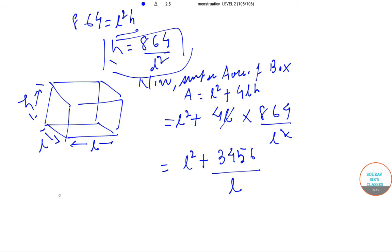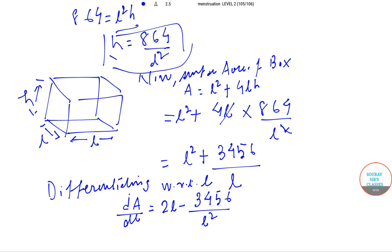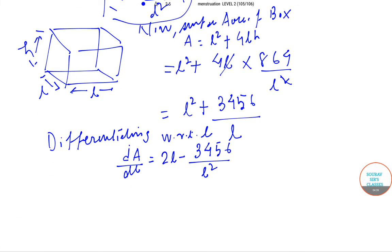We will differentiate with respect to L to find maximum or minimum values. So dA by dL equals 2L minus 3456 by L squared. Setting this equal to 0, we get 2L minus 3456 by L squared equals 0.